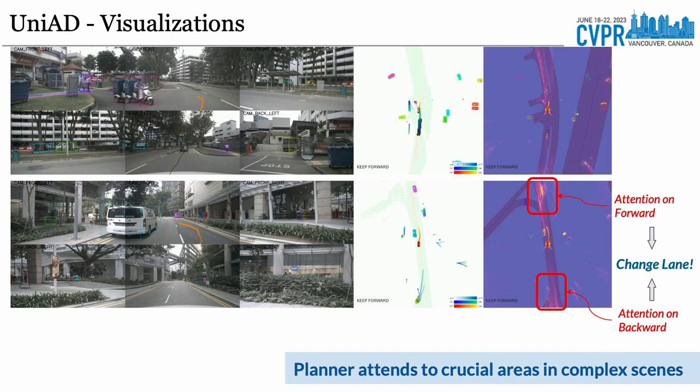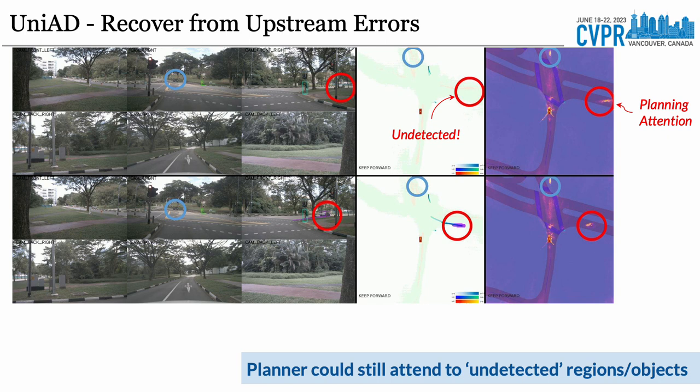We exhibit the strong interpretability of UniAD by visualizing its intermediate representations in complex scenes. In these two scenarios, the ego vehicle is changing lanes attentively to avoid an obstacle vehicle. From the attention mask of the planner, we can observe that UniAD pays distinct attention not only to obstacles but also to the road both ahead and behind the vehicle. This behavior aligns with our human driving habits. The planner of UniAD also reveals a desirable capability to recover from upstream errors.